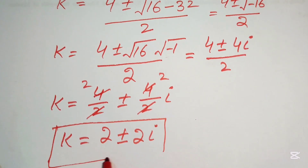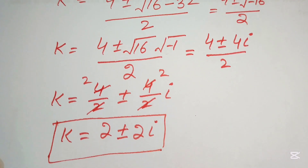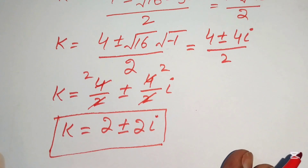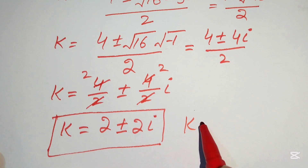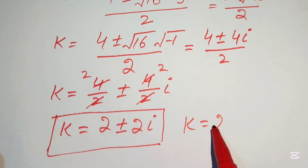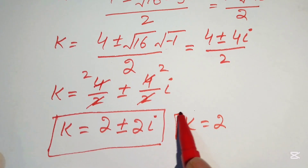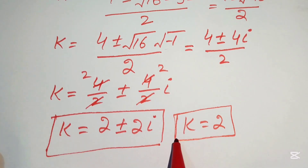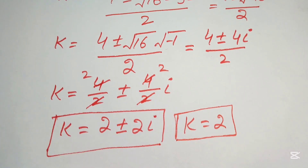The three solutions of the given equation are: k = 2 (real root), and k = 2 + 2i and k = 2 − 2i (complex roots). This is the final answer. Thank you for watching — please subscribe for more videos.